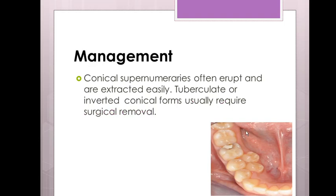Regarding management: conical supernumeraries often erupt and are extracted easily. Tuberculate or inverted conical forms usually require surgical removal. We can use the elevator or the forceps, or both, in order not to disrupt the sequence of the other teeth.